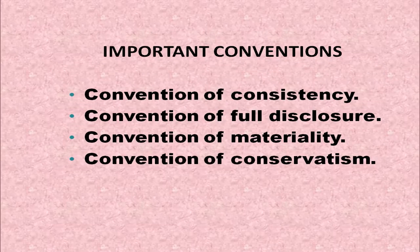Accounting Conventions are evolved through regular and consistent practice — that is, continuous practice of the same method over many years — to facilitate uniform recording in the books of accounts. The important conventions are: Convention of Consistency, Convention of Full Disclosure, Convention of Materiality, and Convention of Conservatism.